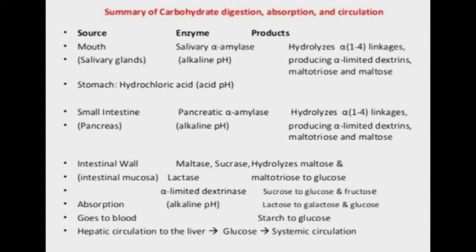To briefly summarize: in the mouth, salivary amylase hydrolyzes alpha-1,4 linkages, producing limited dextrins and maltose. In the stomach, no digestion takes place. In the small intestine, pancreatic amylase, maltase, sucrase, and lactase break down starch, dextrins, maltose, and other disaccharides. The net result is glucose, galactose, and fructose, which enter the hepatic circulation and are then distributed through the systemic circulation throughout the body.